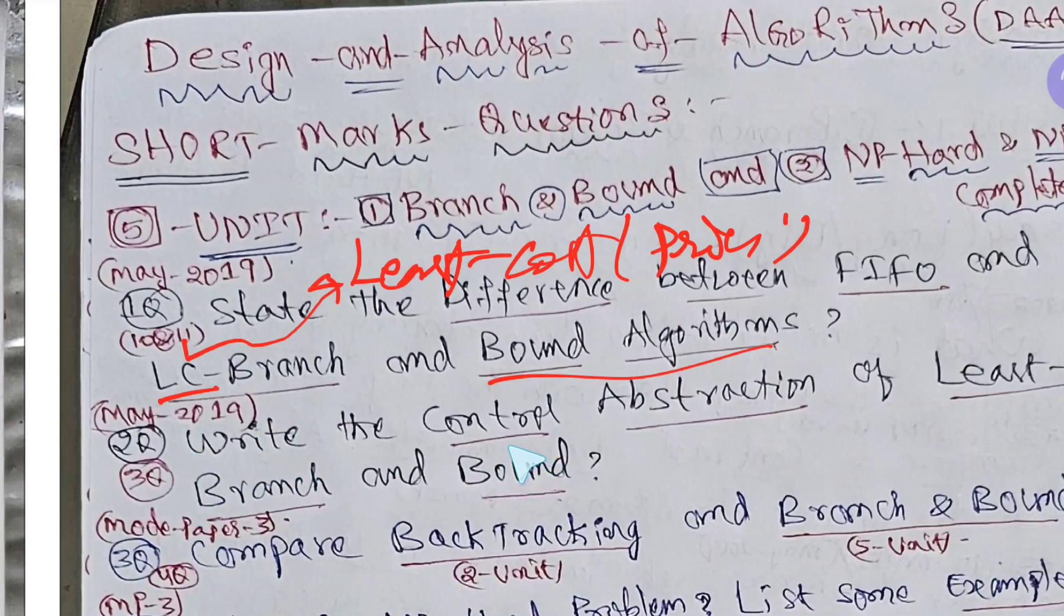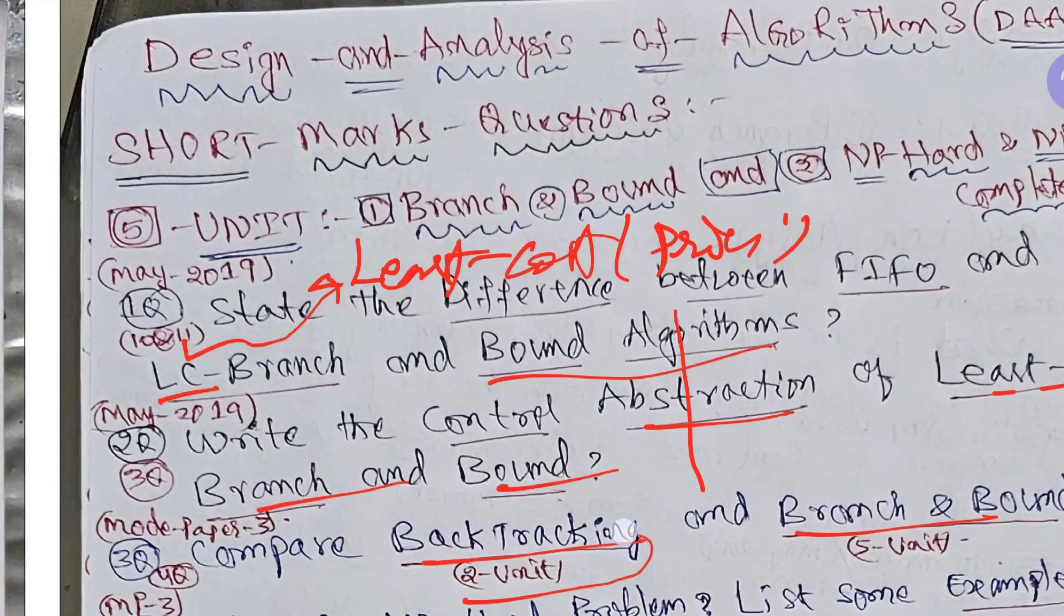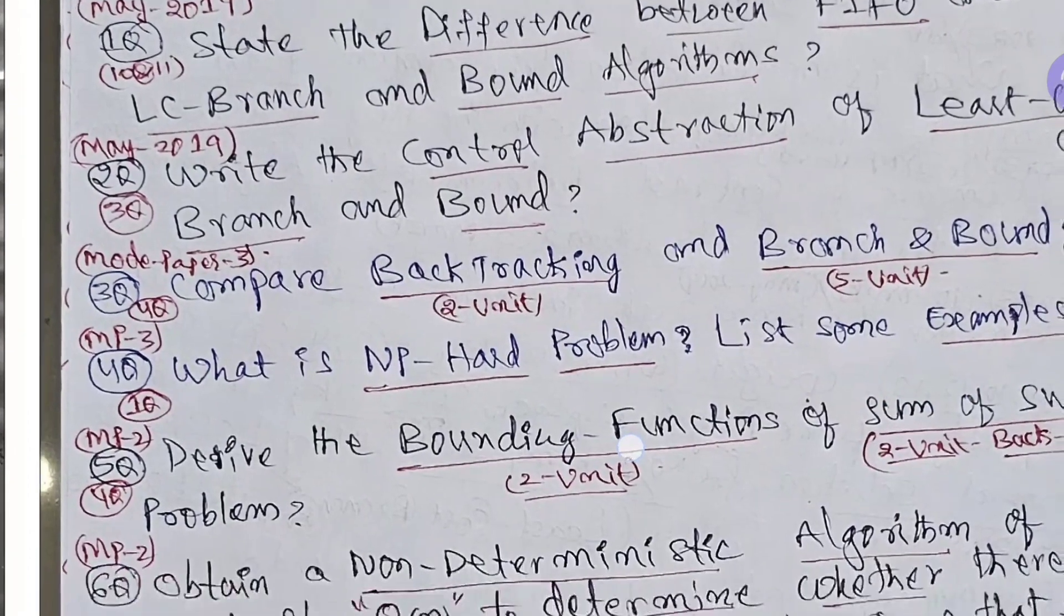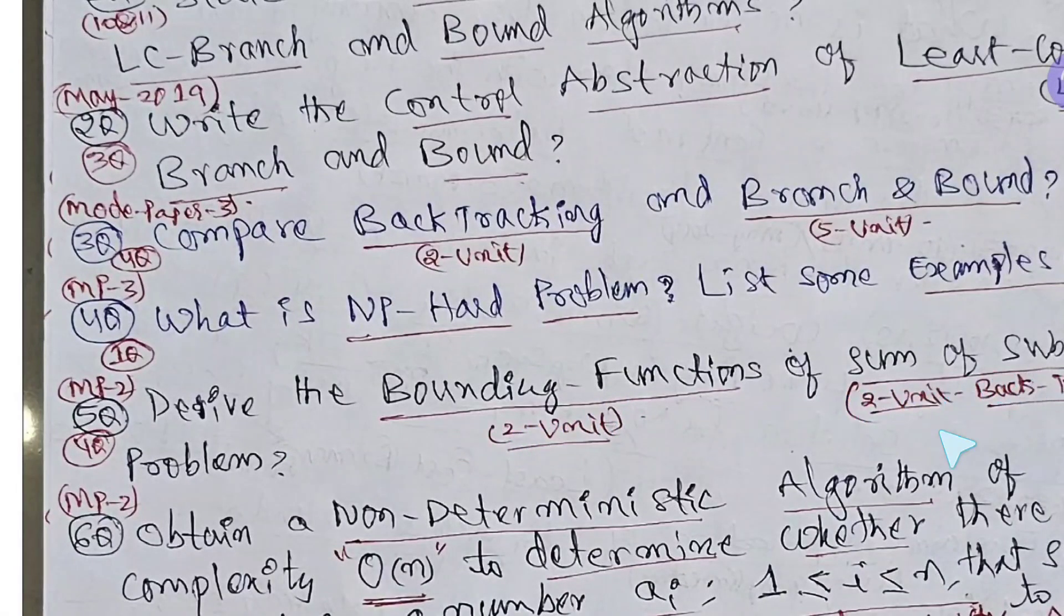And second question, write control abstract least cost branch and bound and backtracking and branch and bound. This I have been telling you will be getting some of the questions like difference between the chapter titles. Branch and bound is fifth unit and backtracking is fourth unit. You need to compare that two. I told you, you need to read all the titles question. And fourth question, model paper three question, NP hard problem, list out and explain it. Derive boundary functions of sum of subsets. Actually sum of subsets is fourth unit. So you need to have some common sense how to do sum of subset problem. This is also very easy. Probably I will try to shoot this sum of subset problem. Very easy.